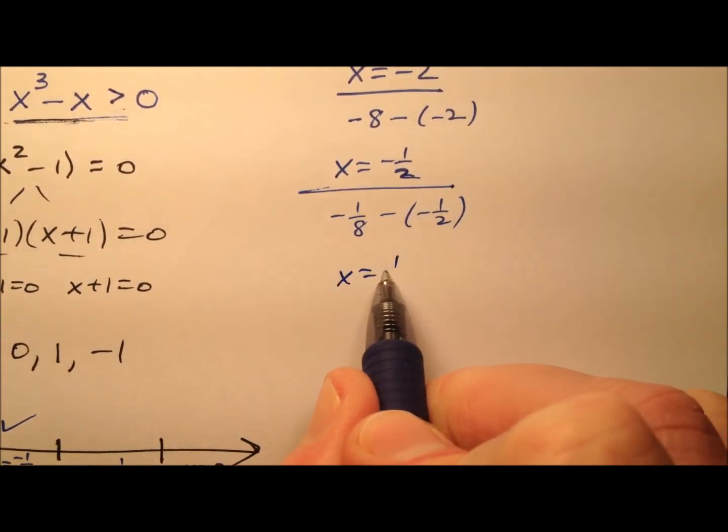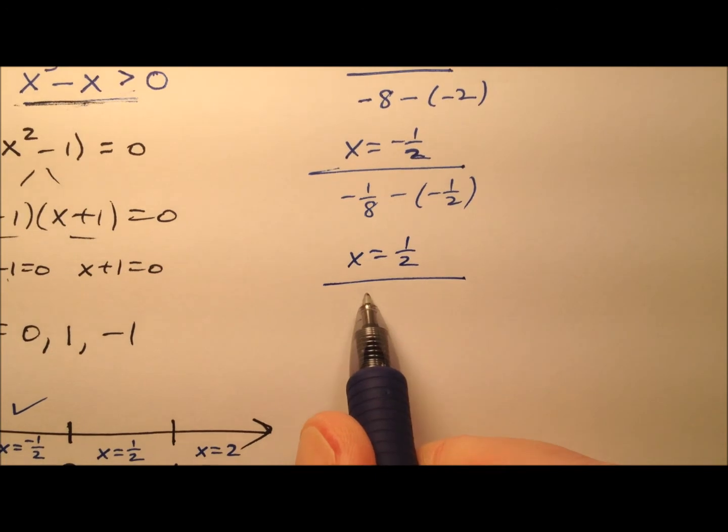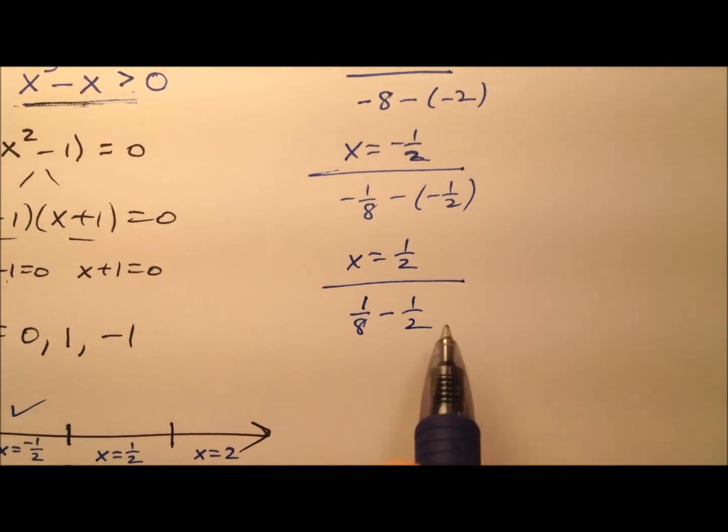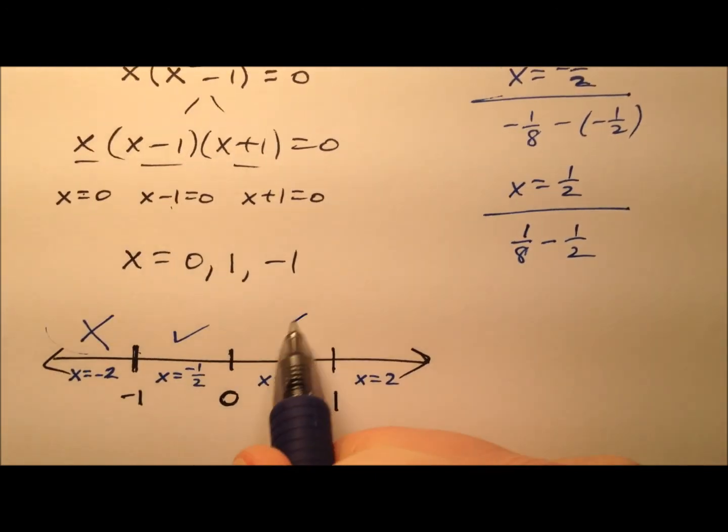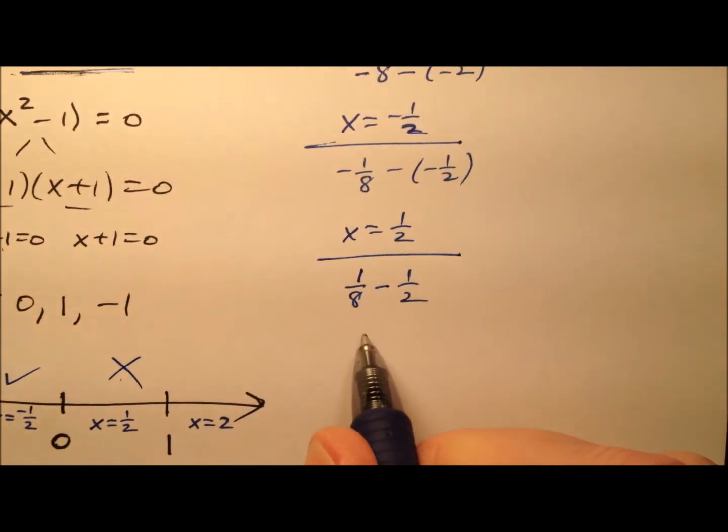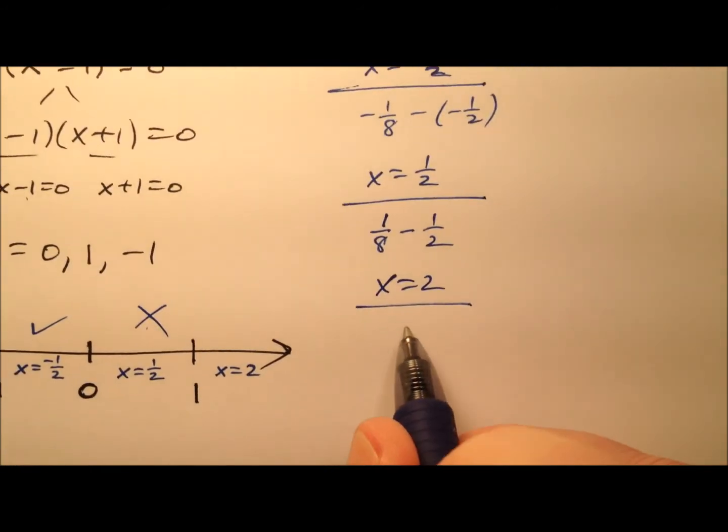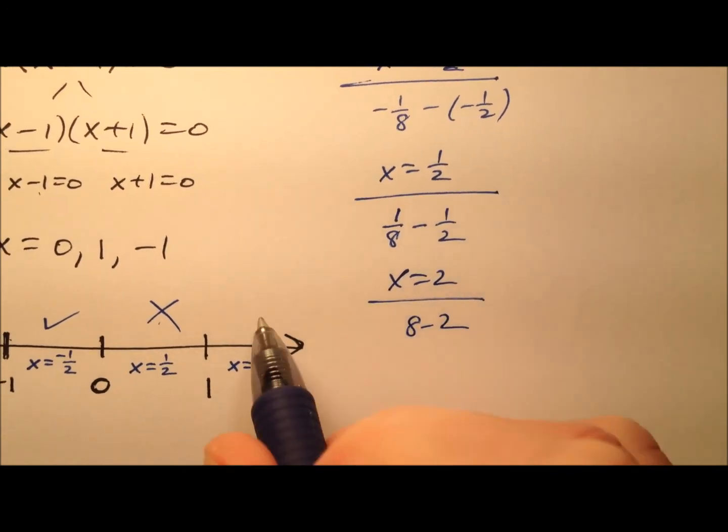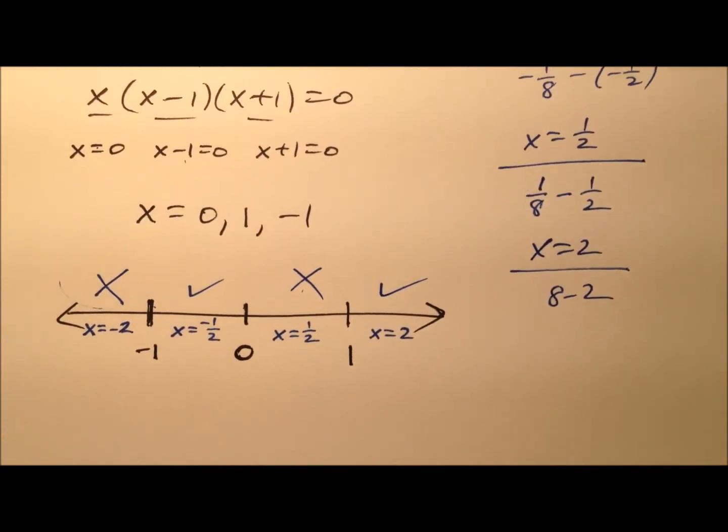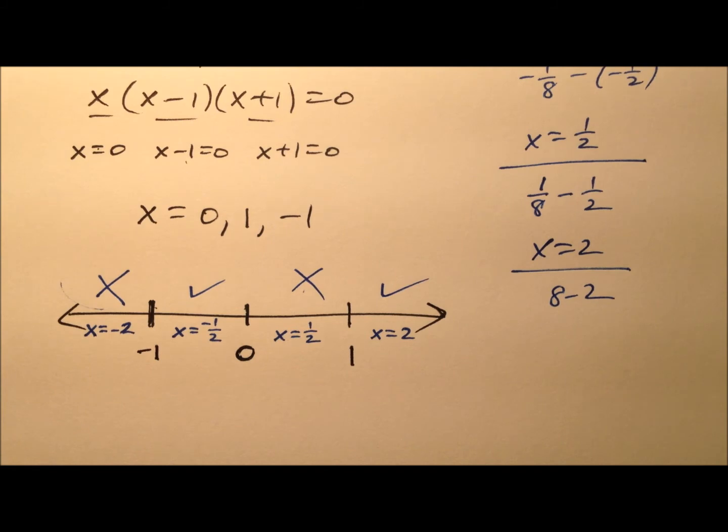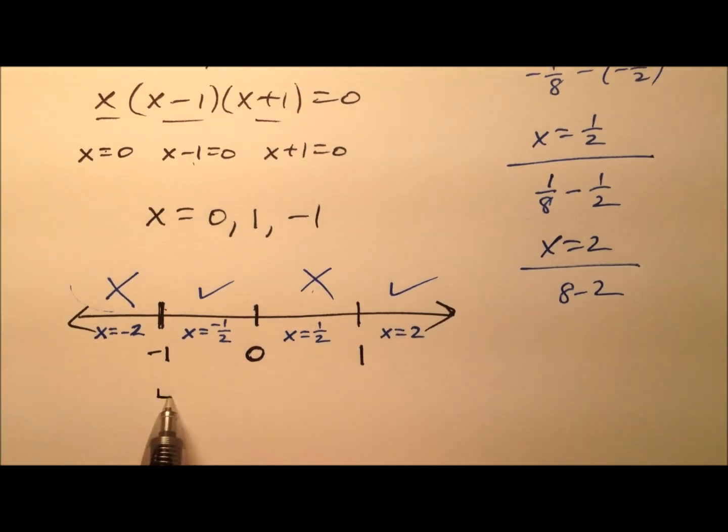Let's try positive one half. That'll be one eighth minus a half, and that'll be negative, so that's no good. Finally, x equals two. Two cubed is eight minus two, that'll be positive, so that's good. We have a couple of regions that are acceptable and a couple that are not acceptable.